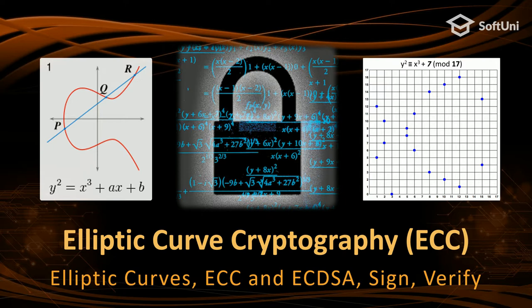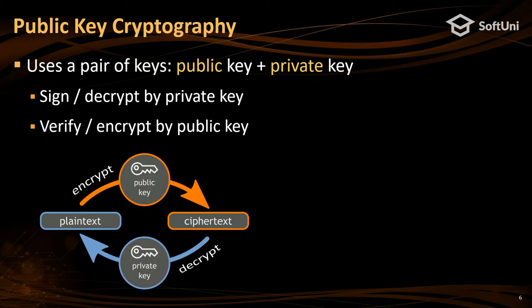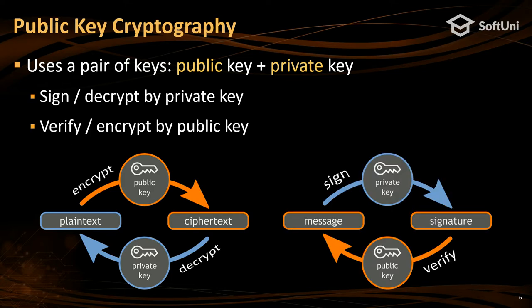I'll explain in brief what an elliptic curve is, what elliptic curve cryptography is, how it is applied to calculate ECDSA signatures, how we sign messages, and how we verify messages. I'll start with public key cryptography because elliptic curves are a tool to implement public key cryptography systems. Public key cryptography relies on a public key and private key which come as a mathematically connected pair. We can use the private key to sign and encrypt messages, and the public key to verify signatures and decrypt.